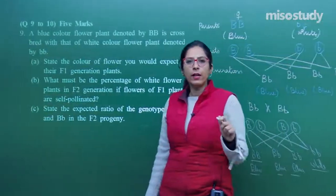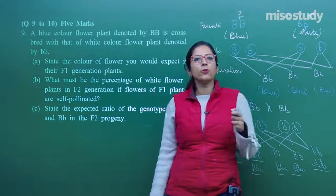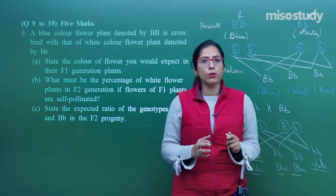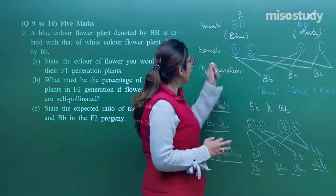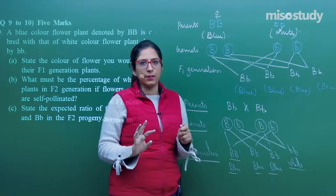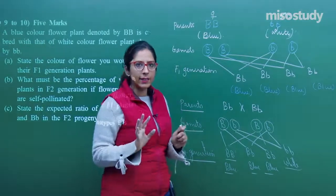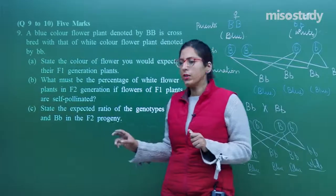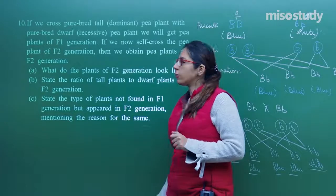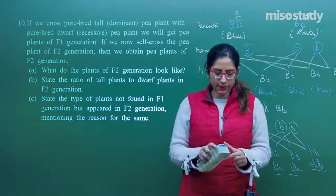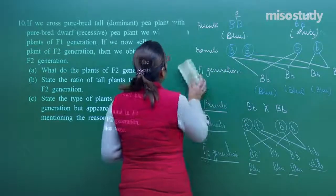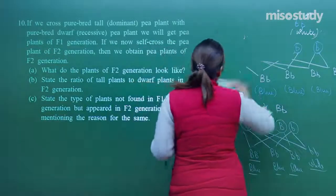This was question number 9 — a very easy question. You just have to use your mind and proceed properly. Make a neat cross with proper labels on the sides: parents, gametes, F1 generation, F2 generation. The next question number 10 is also of 5 marks and is from the heredity part.